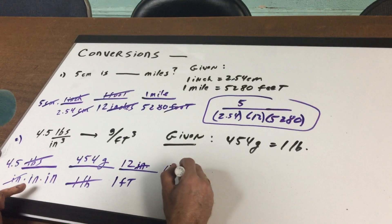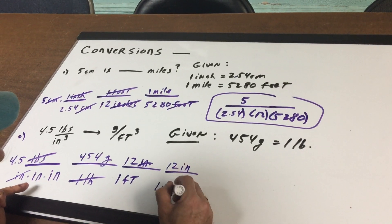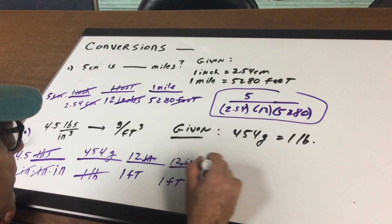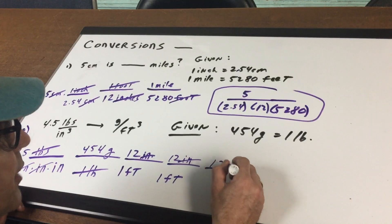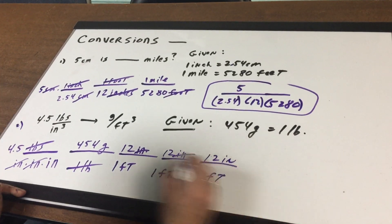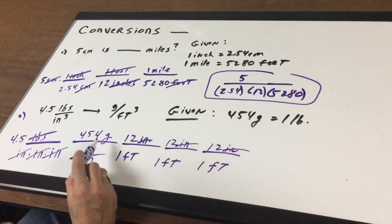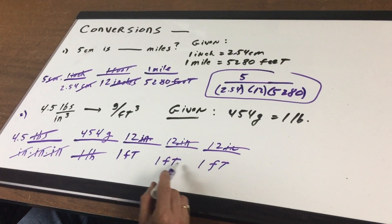Now go for the next one. There is 12 inches in one foot. Things are looking better. There's 12 inches in one foot. And now I am left with grams per foot cubed.